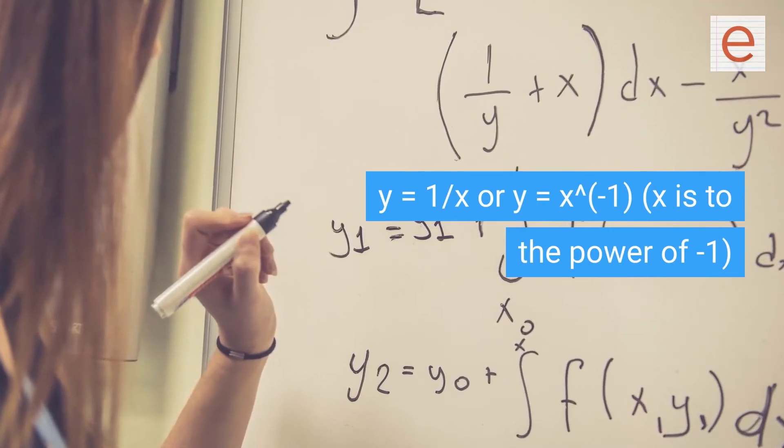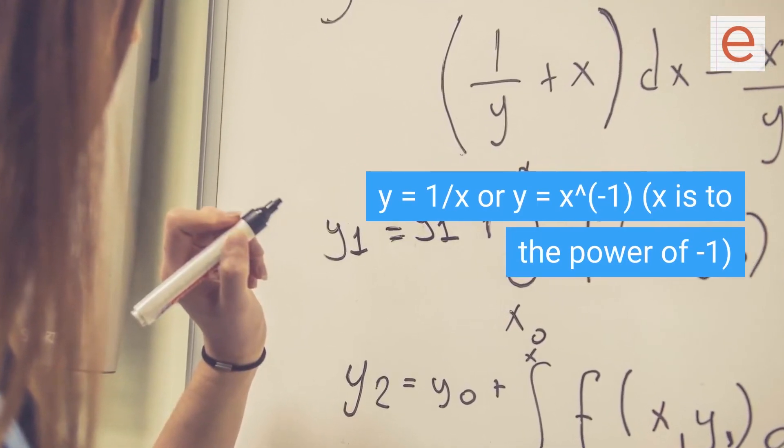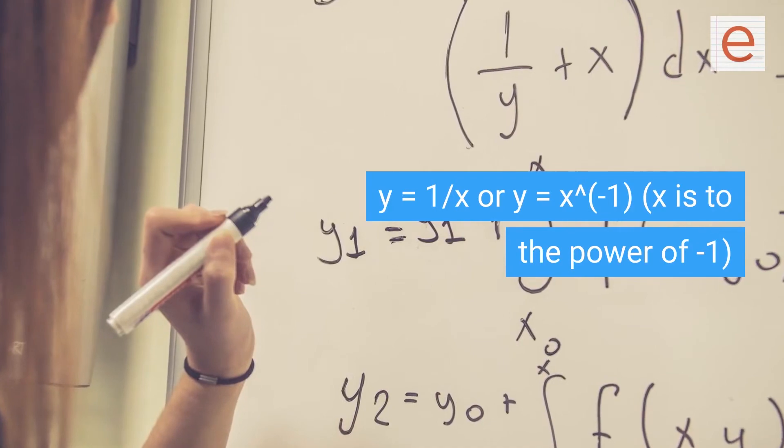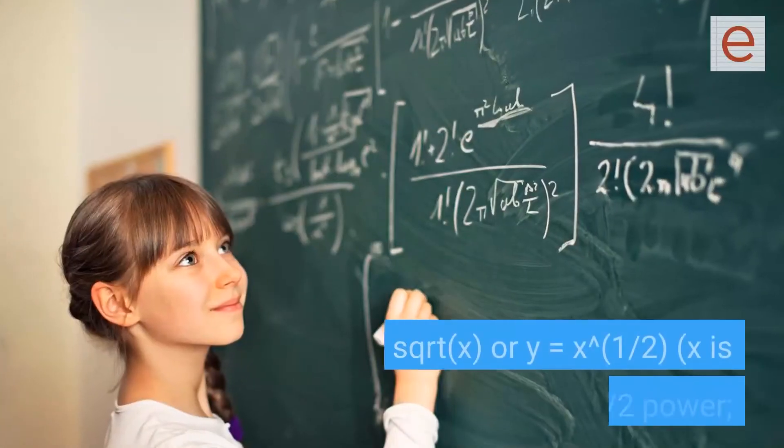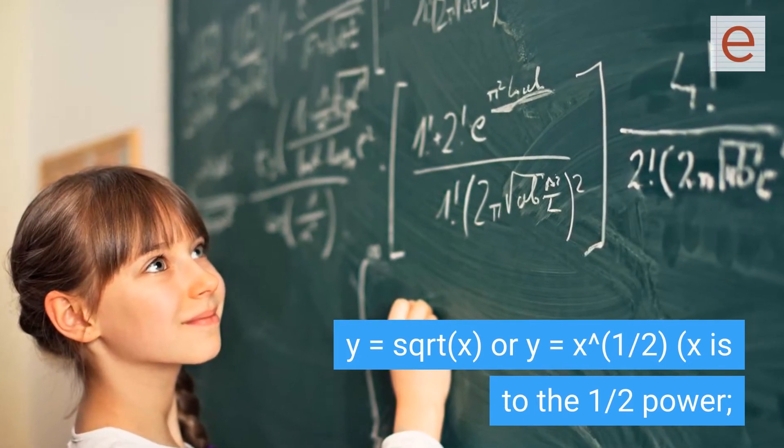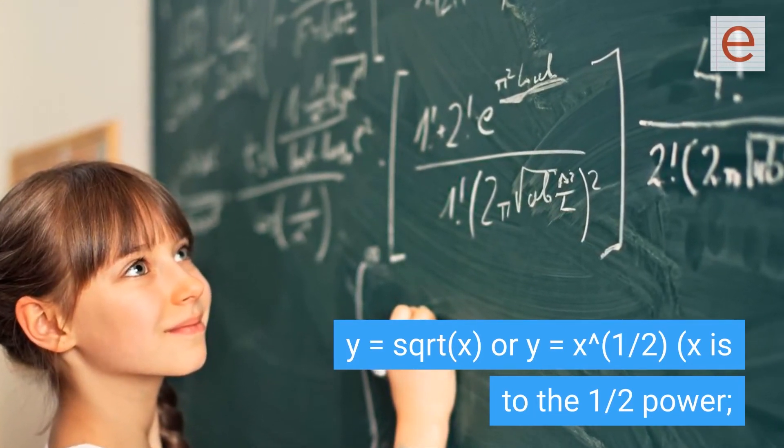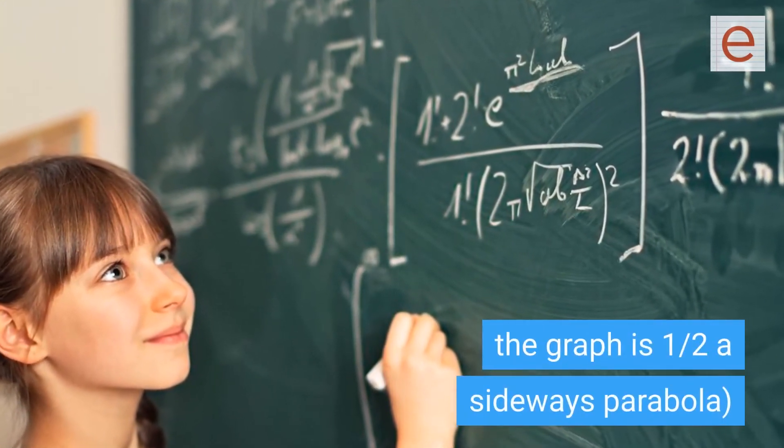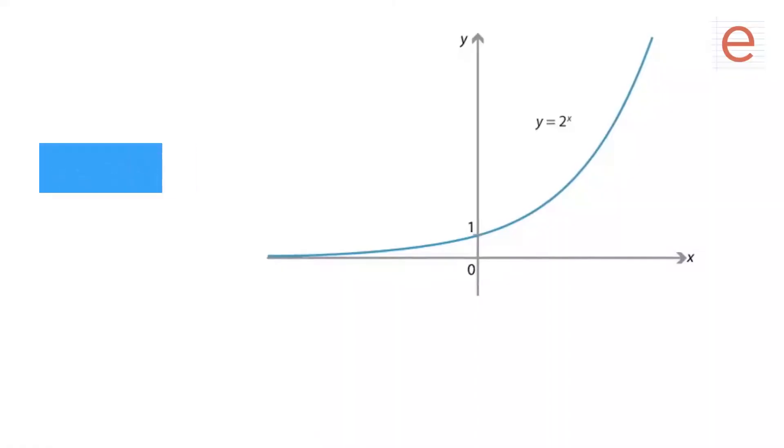x is to the power of minus 1. y equals the square root of x or y equals x to the half, x is to the half power. The graph is half a sideways parabola.